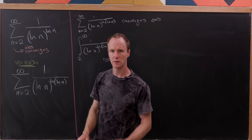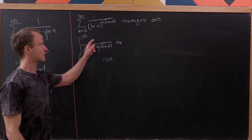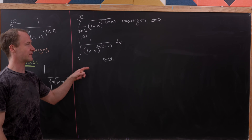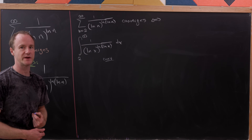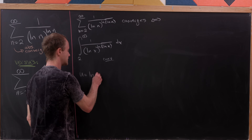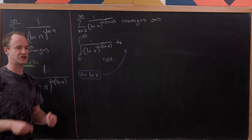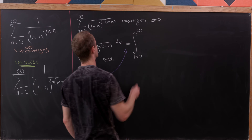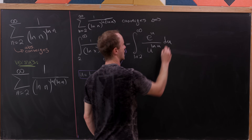Looking at the second series, which looks pretty similar except we've got a log inside a log — a composition. By the integral test, this series with the doubly composed logs converges if and only if the corresponding integral with doubly composed logs also converges. We'll do the same substitution u = log(x), and that gives us the integral from log(2) to infinity of e^u over u^(log u) du.